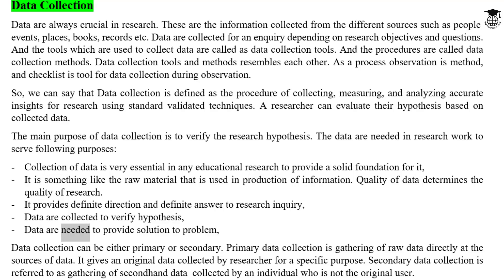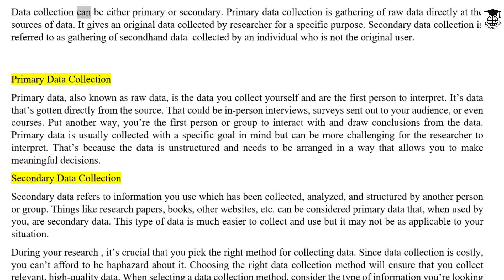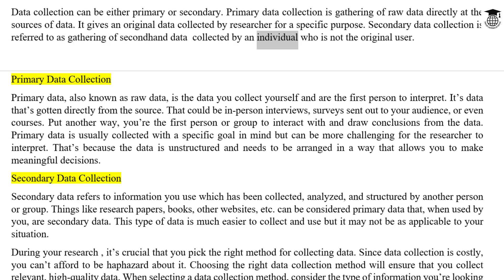Data are needed to provide a solution to a problem. Data collection can be either primary or secondary. Primary data collection is the gathering of raw data directly at the sources of data. It gives an original data collected by the researcher for a specific purpose. Secondary data collection refers to the gathering of second-hand data collected by an individual who is not the original user.